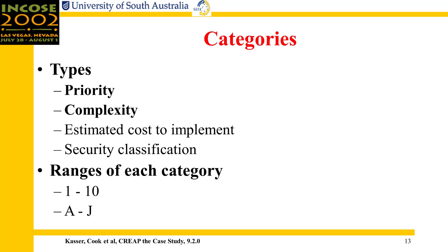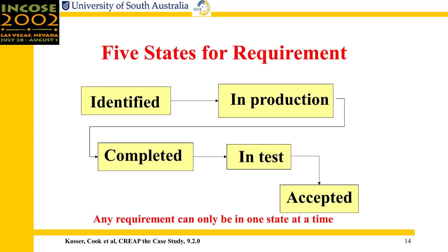For example, if it's a complex requirement with a low priority, do you really need it? Or if it has a high estimated cost to implement and a low priority, again, do you really need it? In each category, you can set up a scale of 1 to 10. Once the rules for setting up a range have been set, they do not change for the duration of the project. But requirements can move within those ranges as you discover more about them as the project goes through its lifecycle. Each requirement may exist in one of five states during the production process.